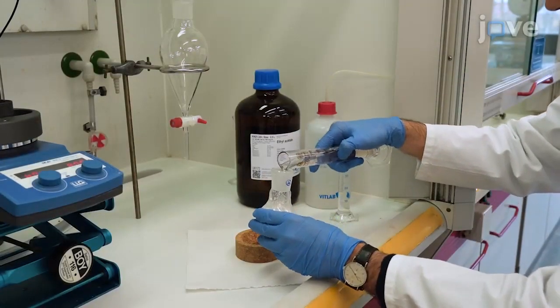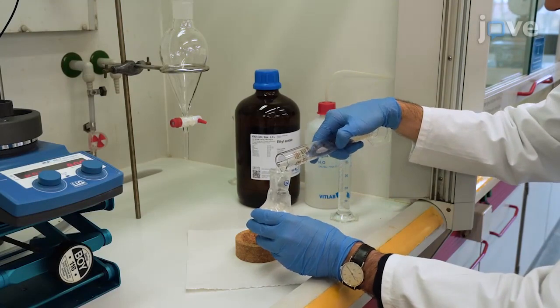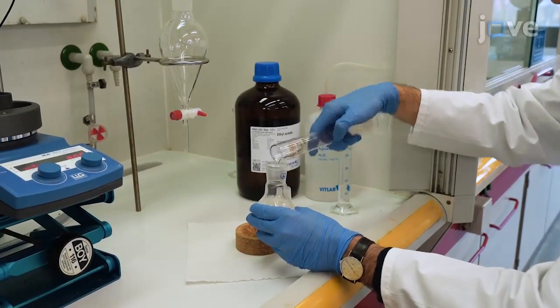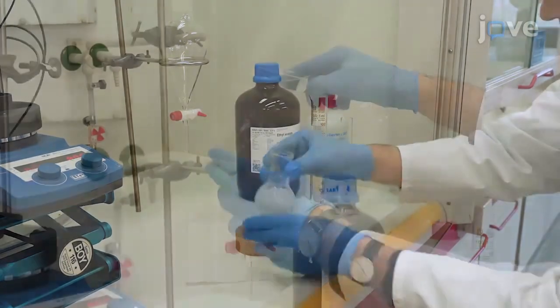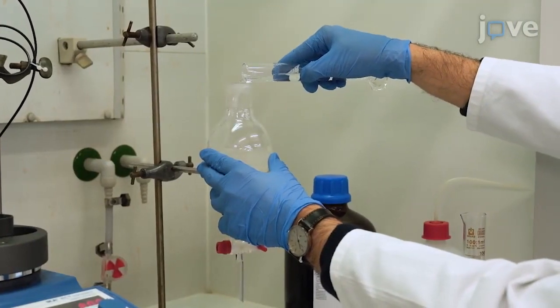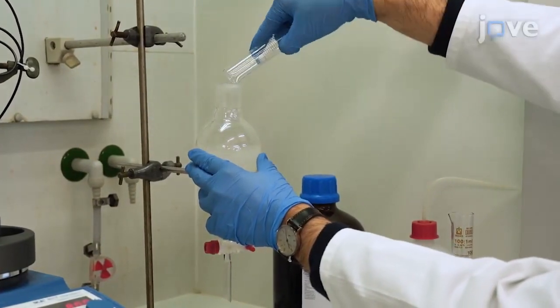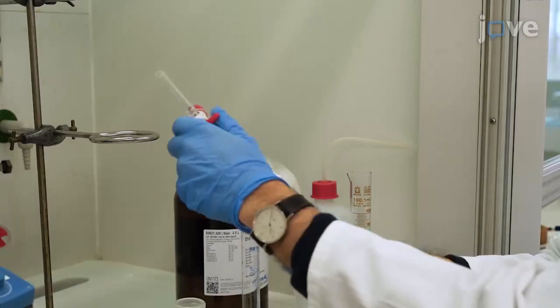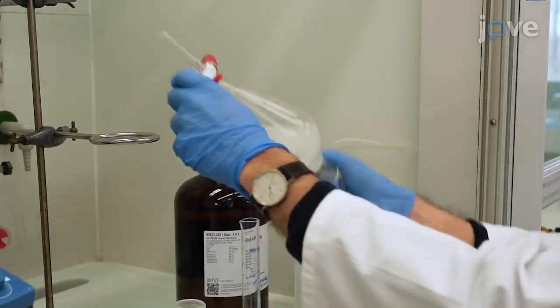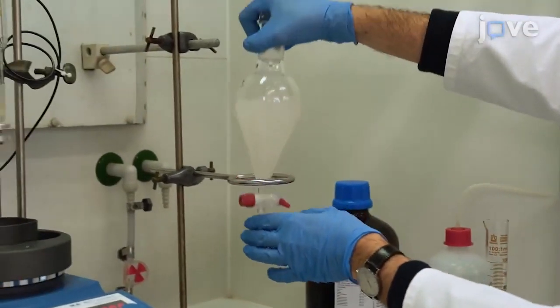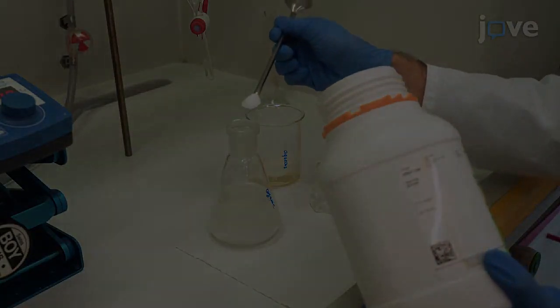Redissolve the residue in 200 milliliters of ethyl acetate and pour it into a separatory funnel. Wash the organic layer with 50 milliliters each of deionized water and brine and dry the organic layer over sodium sulfate. Gravity filter the solution.